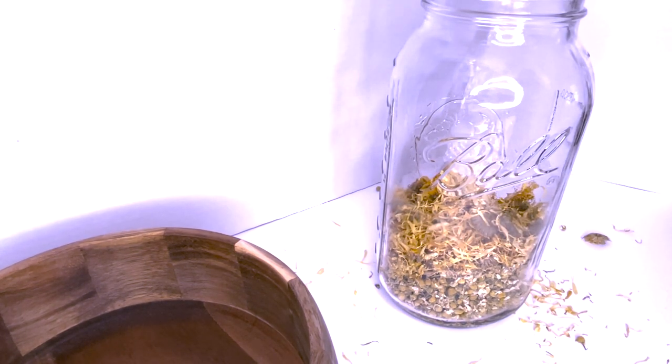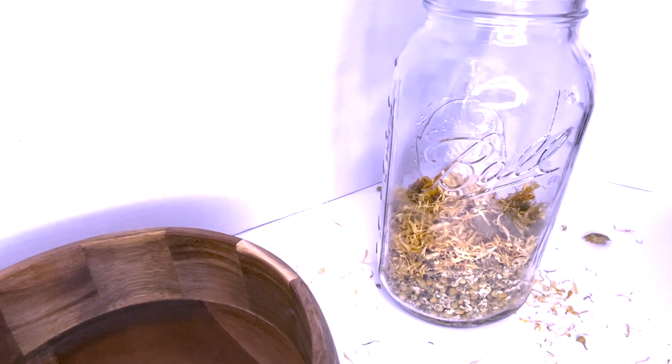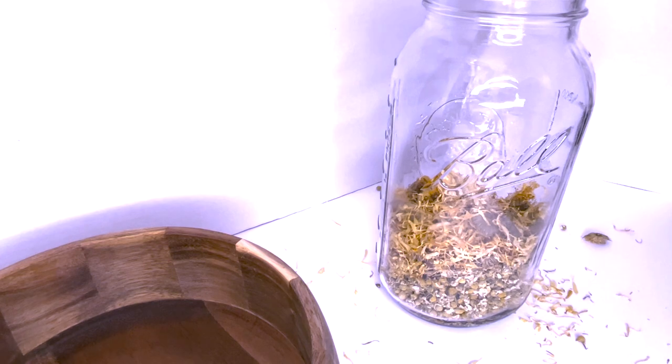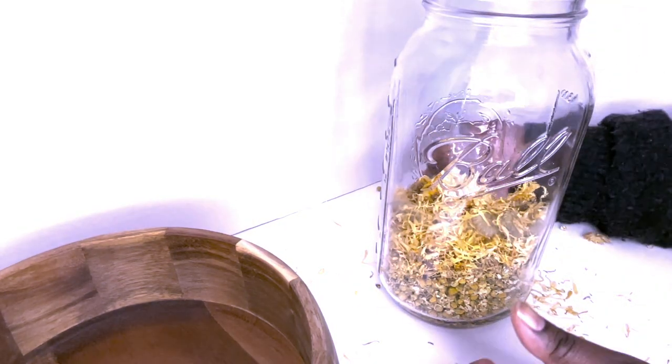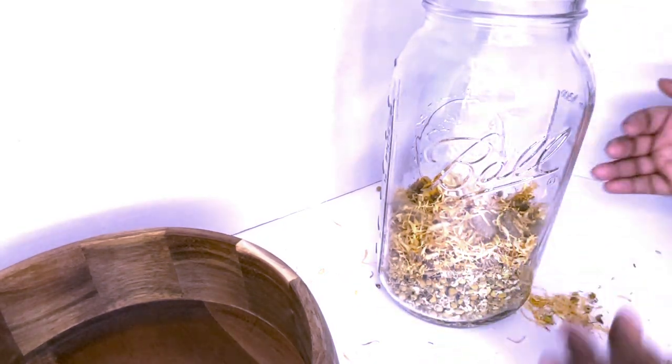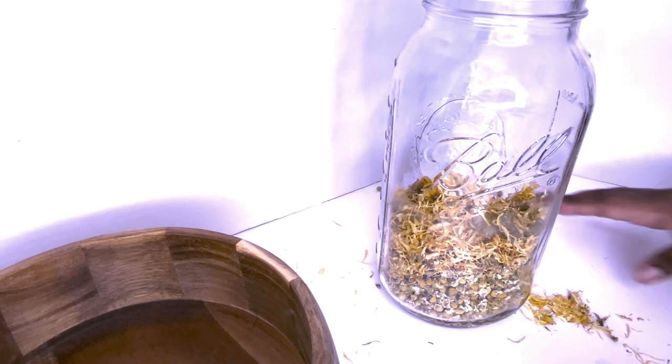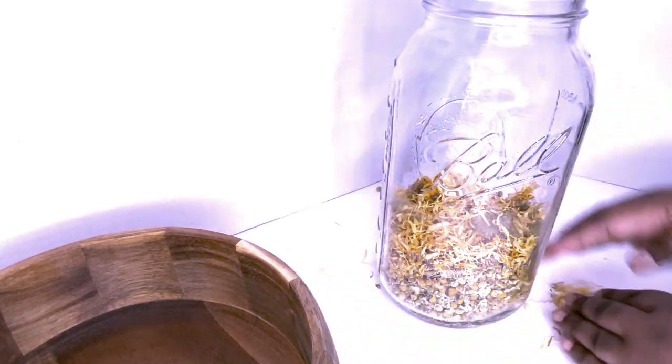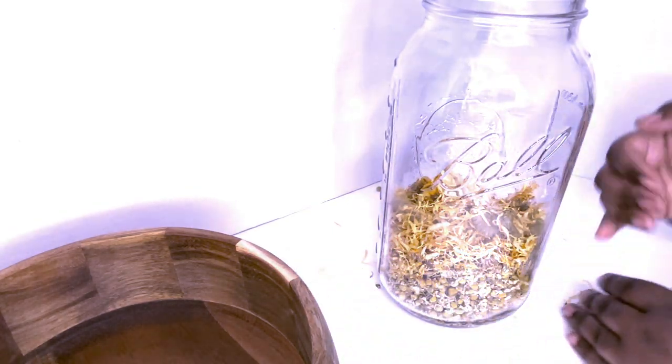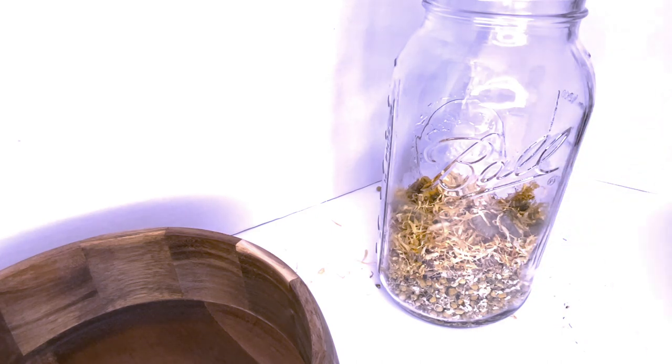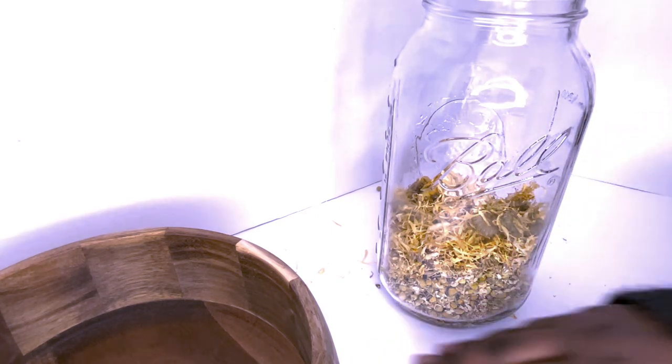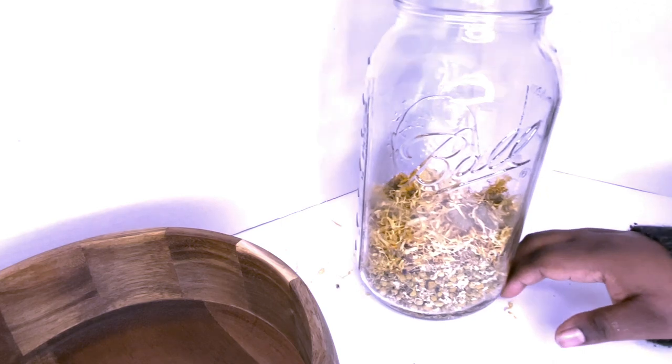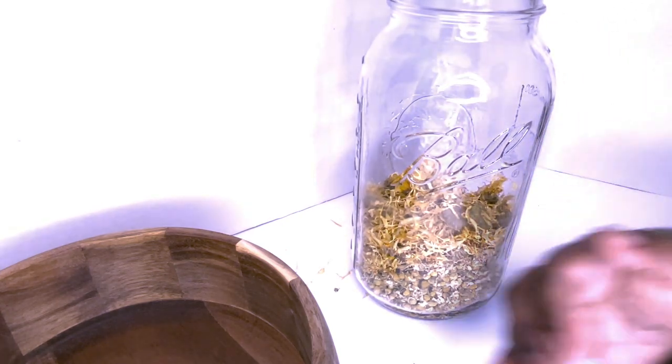We just put our herbs into the mason jar, and next we're going to clean up the area of any leftover herbs that we may have dropped. This is normal—this is part of the process. I do this all the time. Just simply scrape them up and put them back into the jar.